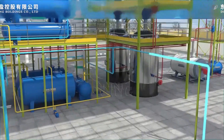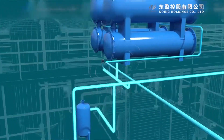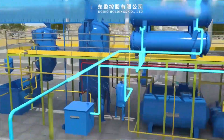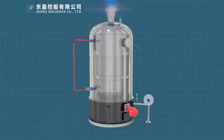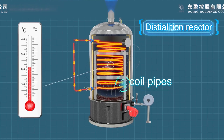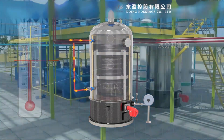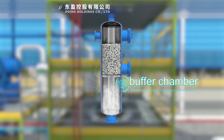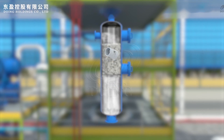Here shows the circulation of the cooling water inside the oil gas cooling system. Here you can see the inner structure of our waste oil distillation reactor. Inside, coil pipes with heat transfer oil are installed. Above the distillation reactor is the buffer chamber, where we put filler to purify the oil gas and filter out the impurities.